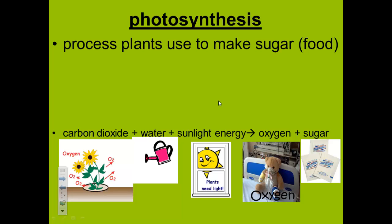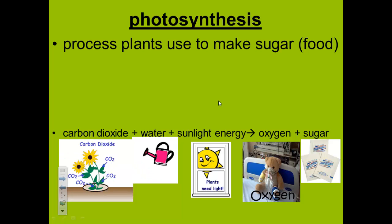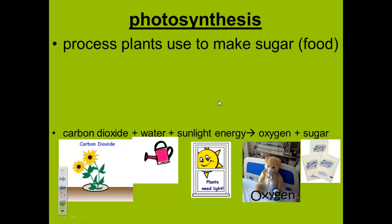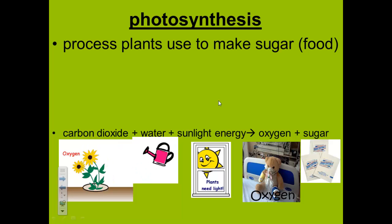Photosynthesis is the process that plants and some other organisms use to make sugar for food. Photosynthesis happens in the chloroplasts of plant cells. Remember that chloroplasts are in plant cells, but not in animal cells.